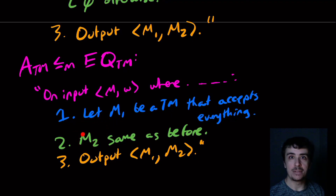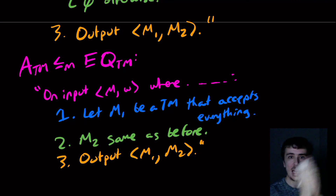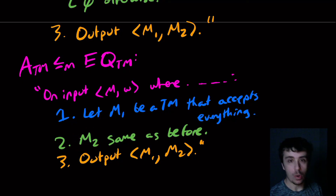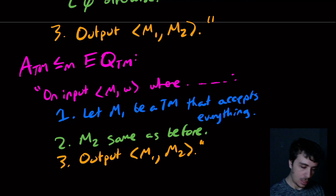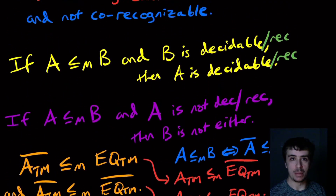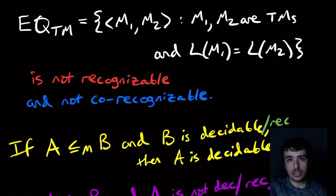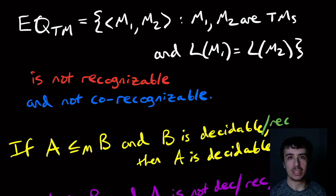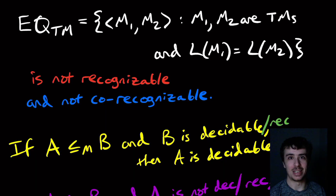Notice you didn't have to use Σ* — you didn't have to accept everything. There are many ways to construct these two machines; it doesn't really matter as long as one machine sticks with one fixed language and the other alternates between two sets depending on whether M accepts w. Therefore, based on the arguments we had, EQTM is not recognizable and its complement is also not recognizable. Leave your thoughts in the comments, please like the video and subscribe — thanks for watching and I'll see you next time.